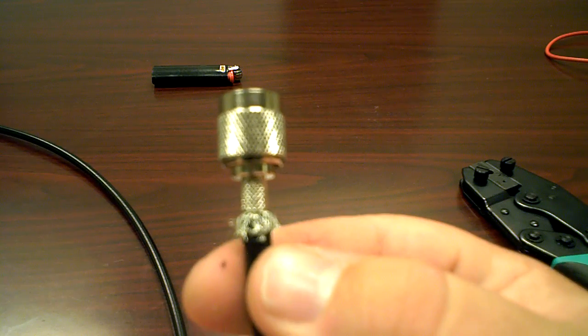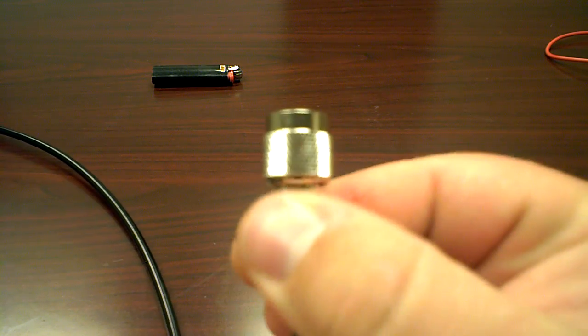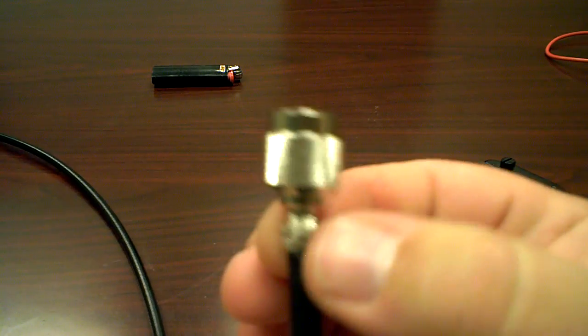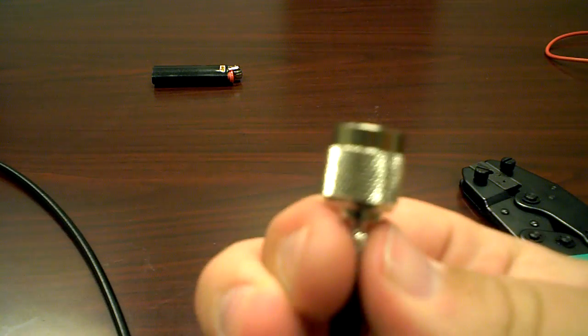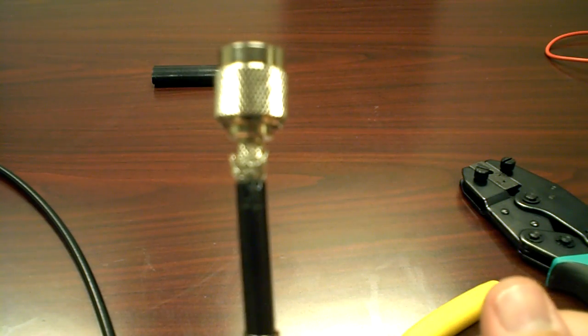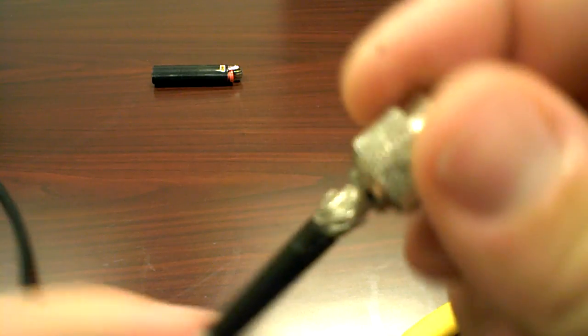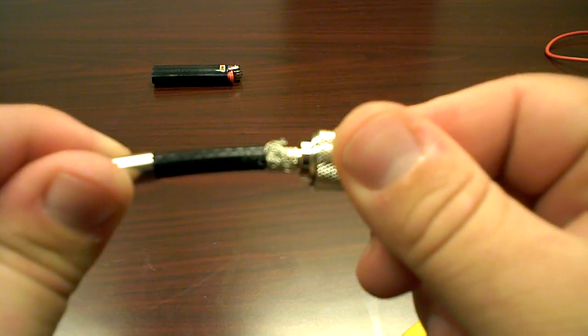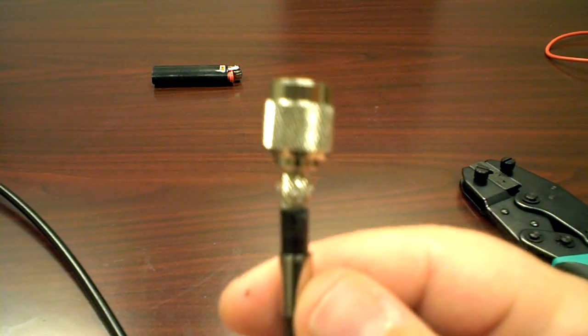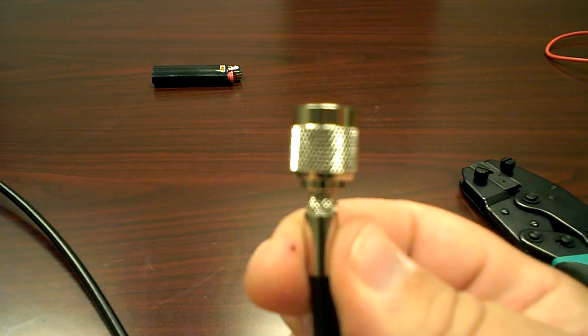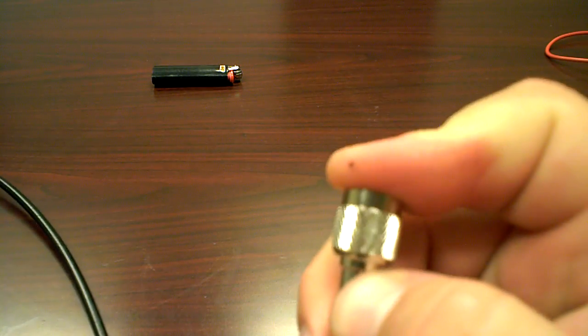So at that point you'll basically take your braid, fold your braid back up the bottom of the connector all the way around. That's just going to ensure that we've got a really good ground. So I'll turn that sideways, you see. I'm going to slide the metal ring up, making sure that's down real good.